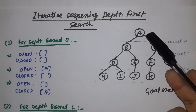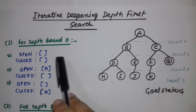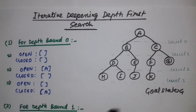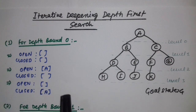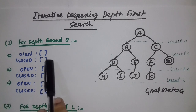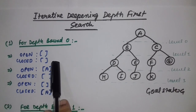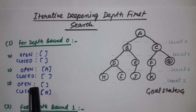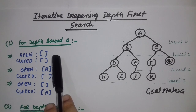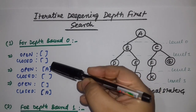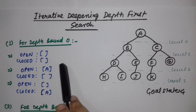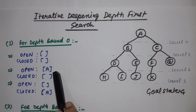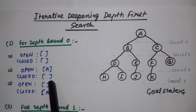Level 0 has only one element, that is A. We have to show each and every step of traversal for each depth bound. For depth bound 0 there are two lists: open and closed. I have already discussed open and closed lists in the previous videos. At the initial state, both open and closed lists are empty. As soon as we start the traversal, element A will come to the open list and the closed list will remain empty.